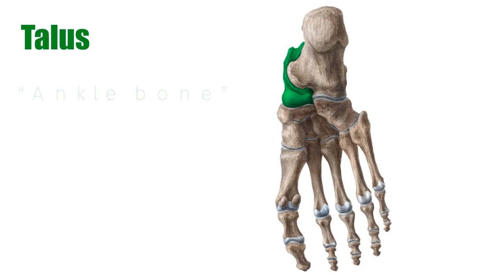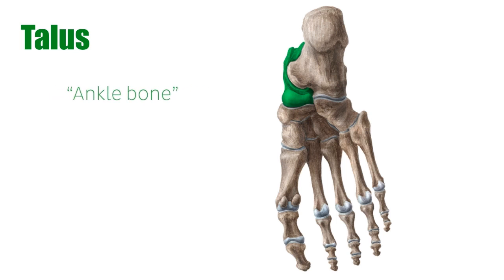The talus is also known as the ankle bone, and it is a saddle-shaped bone located between the tibia and fibula bones of the lower leg, and the calcaneus and navicular bones of the tarsus. Here is the calcaneus, this big bone here, and this is the navicular.